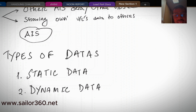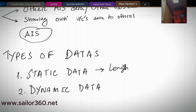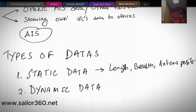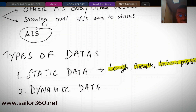Static data are those data which are fixed, like length of the ship, breadth of the ship, and antenna position. These are the static data. Once the AIS is installed, these data are updated at that time and will never change.